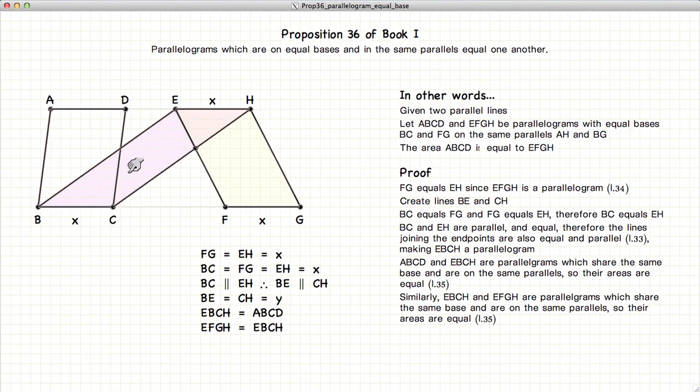We also know that BCHE area is equal to EFGH area, again by Proposition 35.